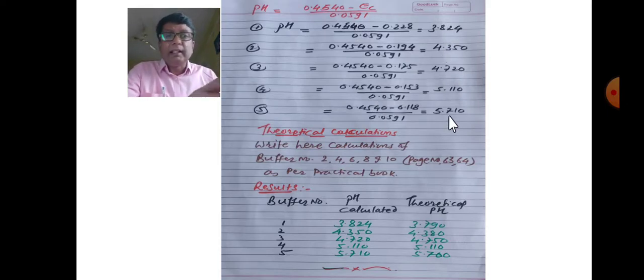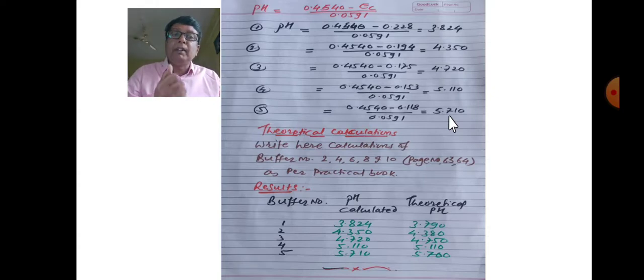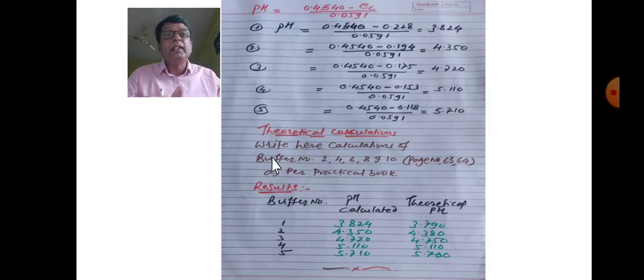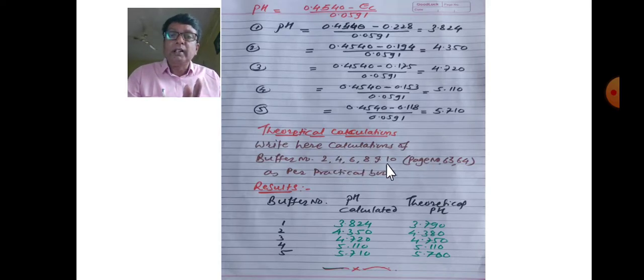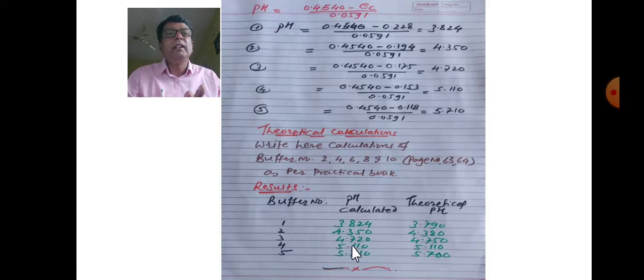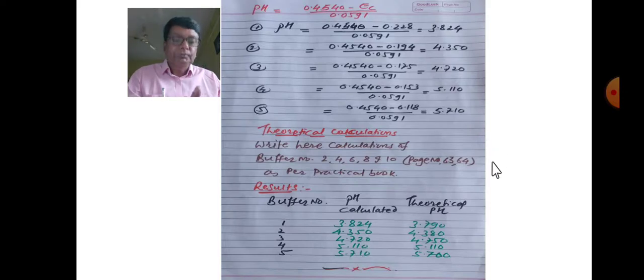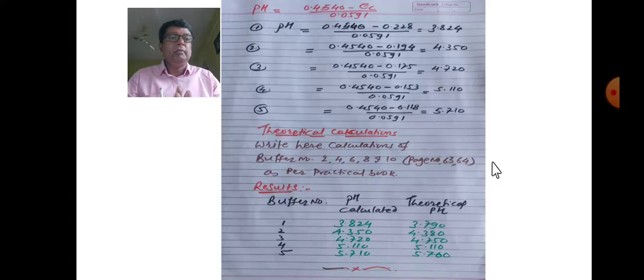So this is the method: prepare the buffer solution, take the readings, and perform the calculations. The calculations show buffer number one through five with pH calculated and theoretical pH values closely matching. For example, buffer number five shows pH 5.093 calculated and 5.110 theoretical. This completes potentiometry experiment number two. Thank you.